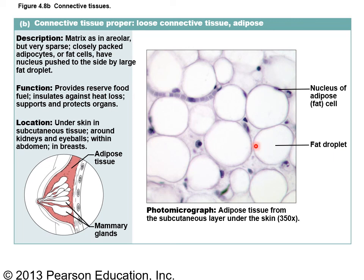Adipose tissue is the next type under loose connective tissue. It is unusual for connective tissue — while connective tissue is typically mostly non-cellular, adipose tissue is 90% cellular with very little non-living matrix. The fat droplet occupies so much of the cell that it squeezes all the organelles to the side. It is protective, involved with reserving fuel, insulation, and supporting and protecting organs.